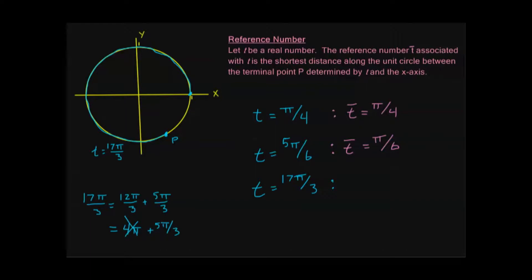Coming back to our reference number: the shortest distance between p and the x-axis along the unit circle is this arc right here — that's t-bar. If I went all the way around the circle, that would be 2π, and I've already gone 5π/3. Since 2π equals 6π/3, we get 2π minus 5π/3 equals π/3. So t-bar equals π/3.